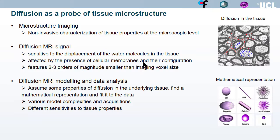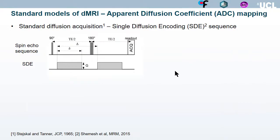There are various models that have different complexities and require different acquisitions. These models can also provide sensitivity and specificity to different tissue properties. The standard diffusion acquisition is the Stejskal-Tanner sequence, also called single pulse gradient or single diffusion encoding, and it contains a pair of pulsed diffusion gradients inserted in, for example, a spin echo sequence.